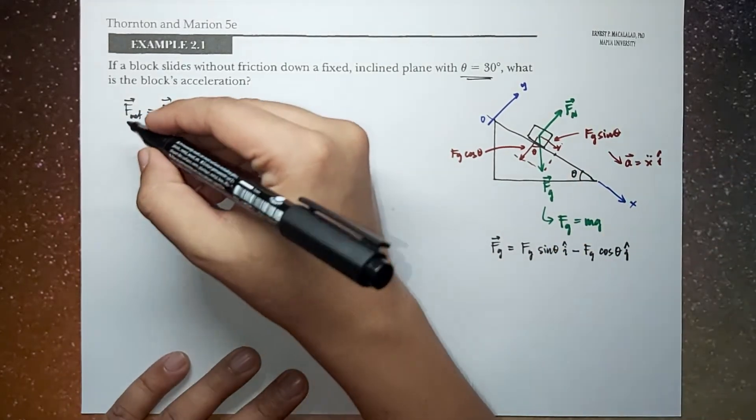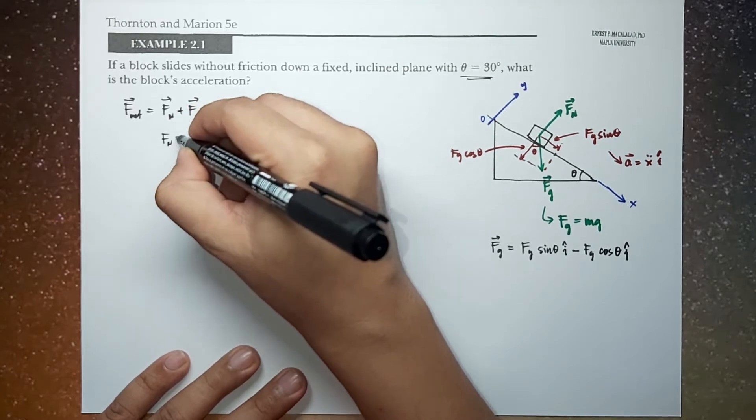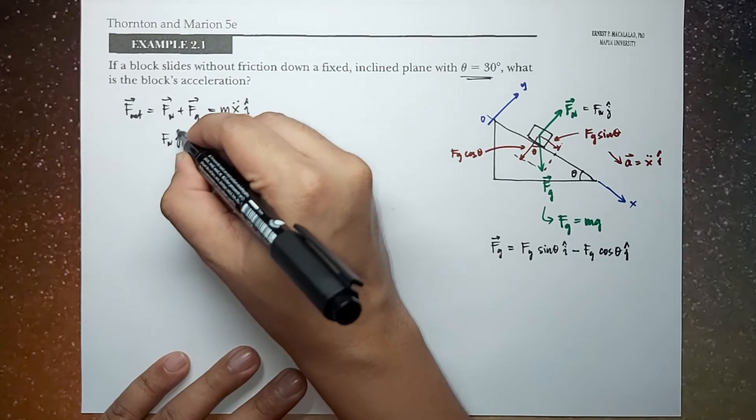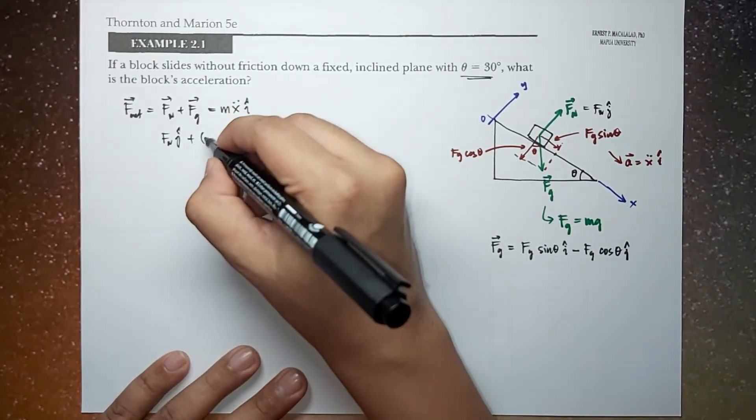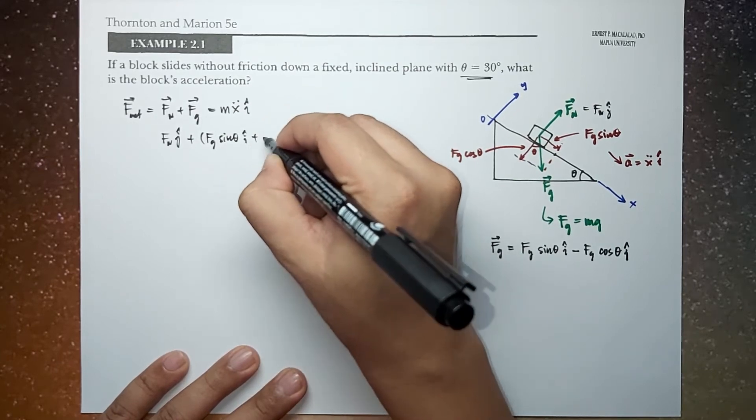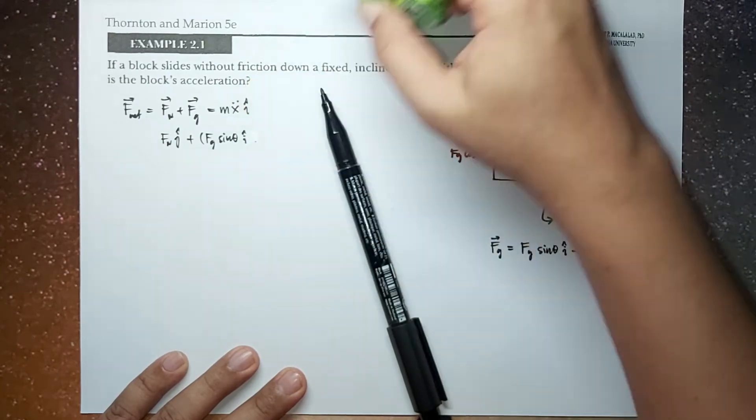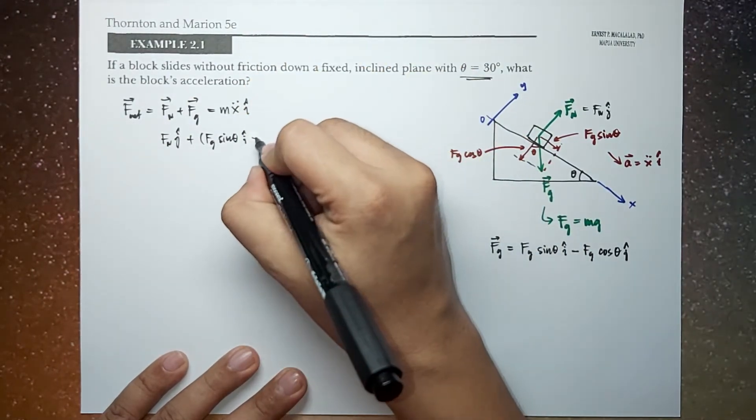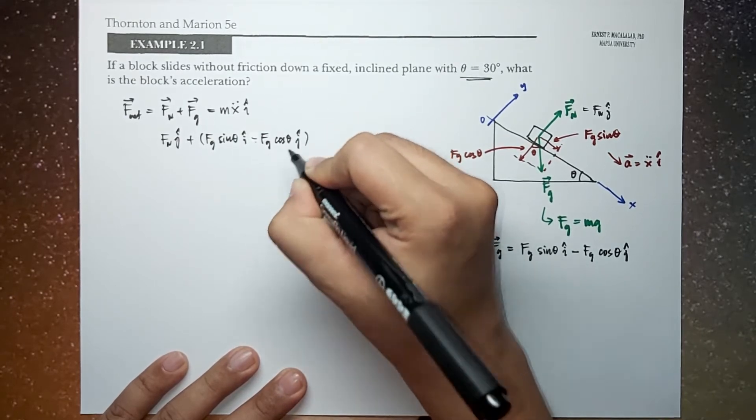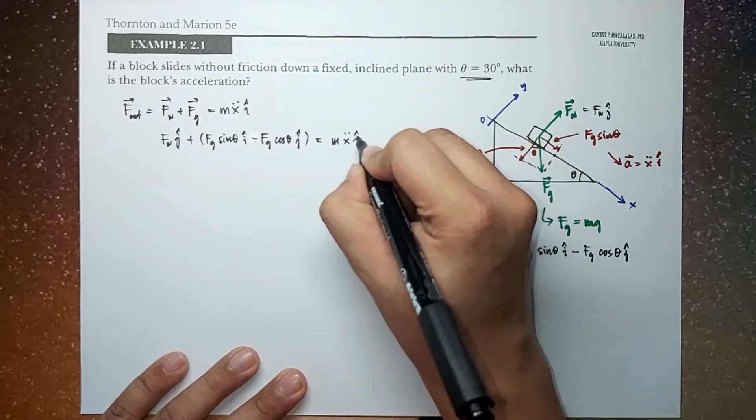So anyway, substituting this, we now have Fn j hat plus Fg sin theta i hat minus Fg cos theta j hat. And this is equal to M x double dot i hat.